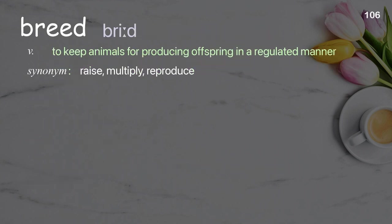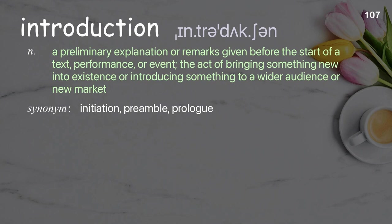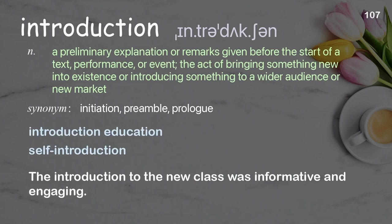Breed: to keep animals for producing offspring in a regulated manner. Examples: breed horses, breed suspicion. This animal breeds in northern latitudes. Introduction: a preliminary explanation or remarks given before the start of a text, performance, or event; the act of bringing something new into existence or introducing something to a wider audience or new market. Examples: self-introduction. The introduction to the new class was informative and engaging.